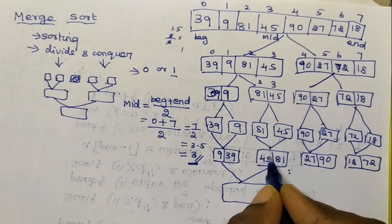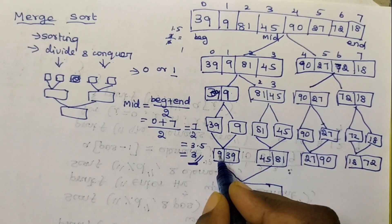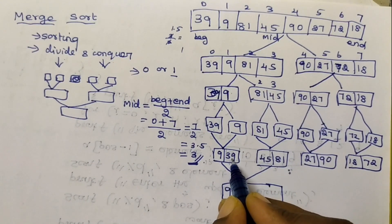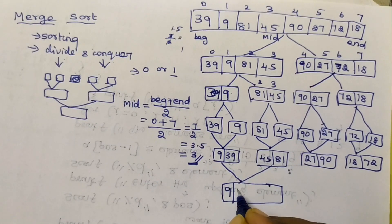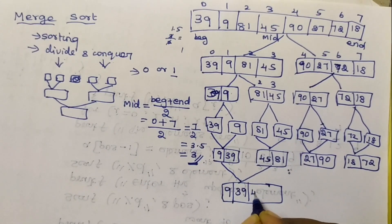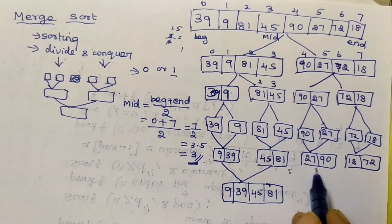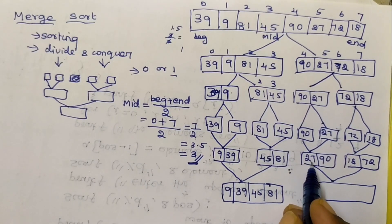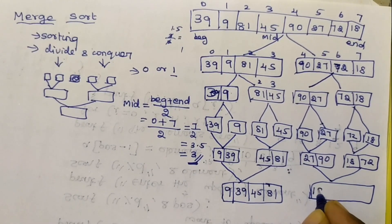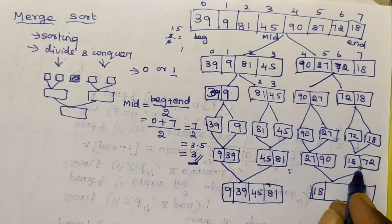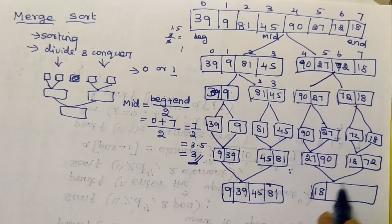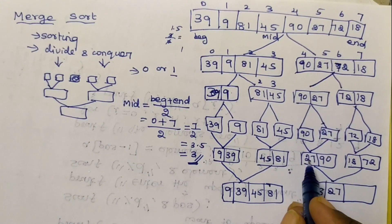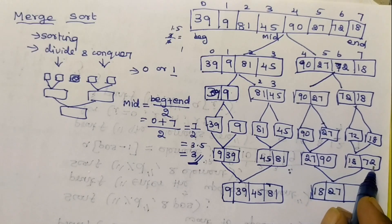In the conquer phase, we compare elements: 39 is compared with 45 — 39 is lesser. Then 8 is compared with 2. Then 27 is compared with 17 — 18 is lesser. Then 27 is compared, and 27 is a lesser value than 90. Finally, 72 is compared.